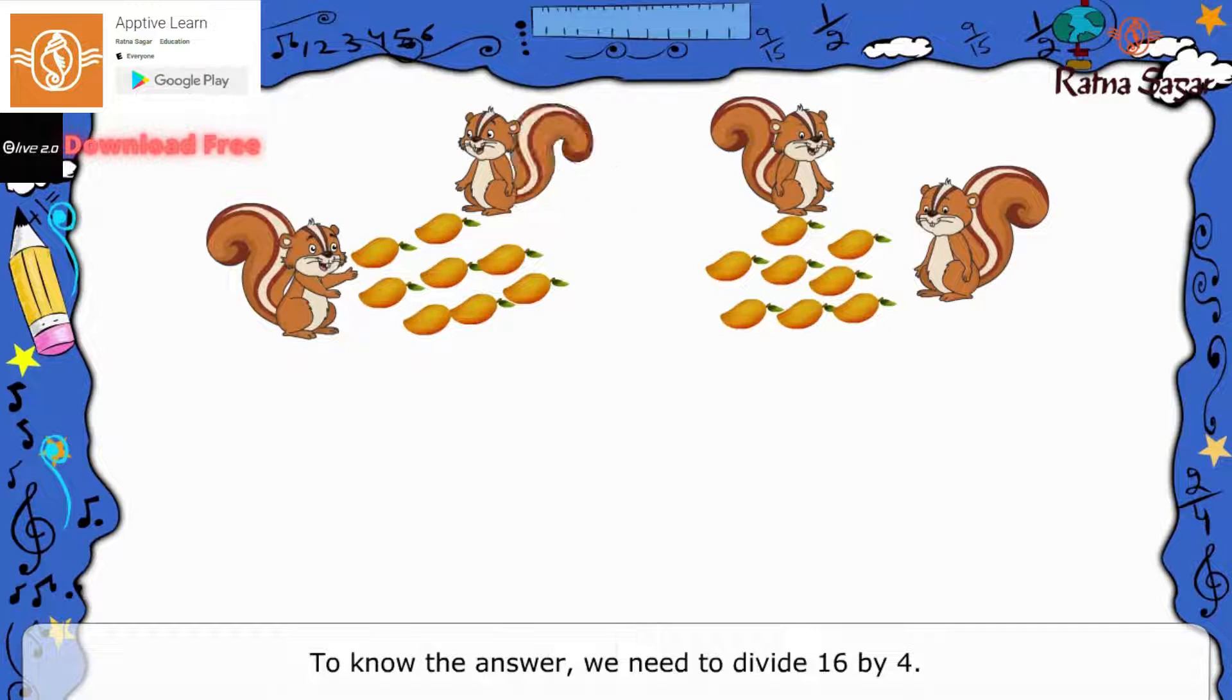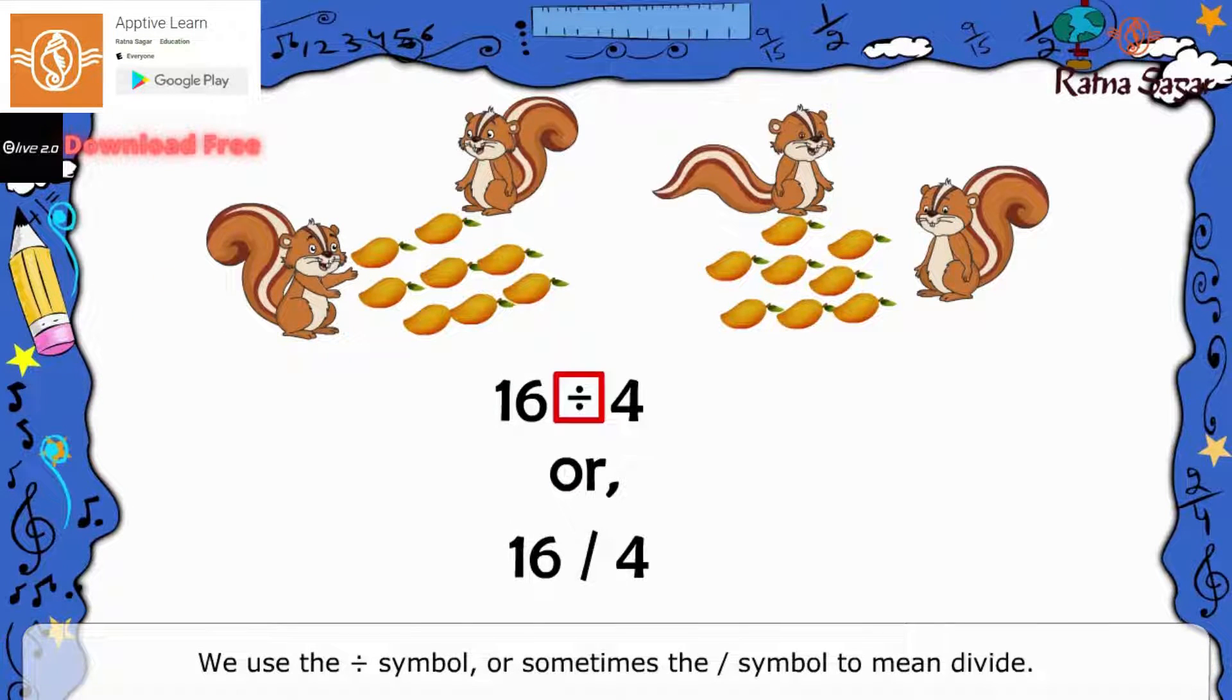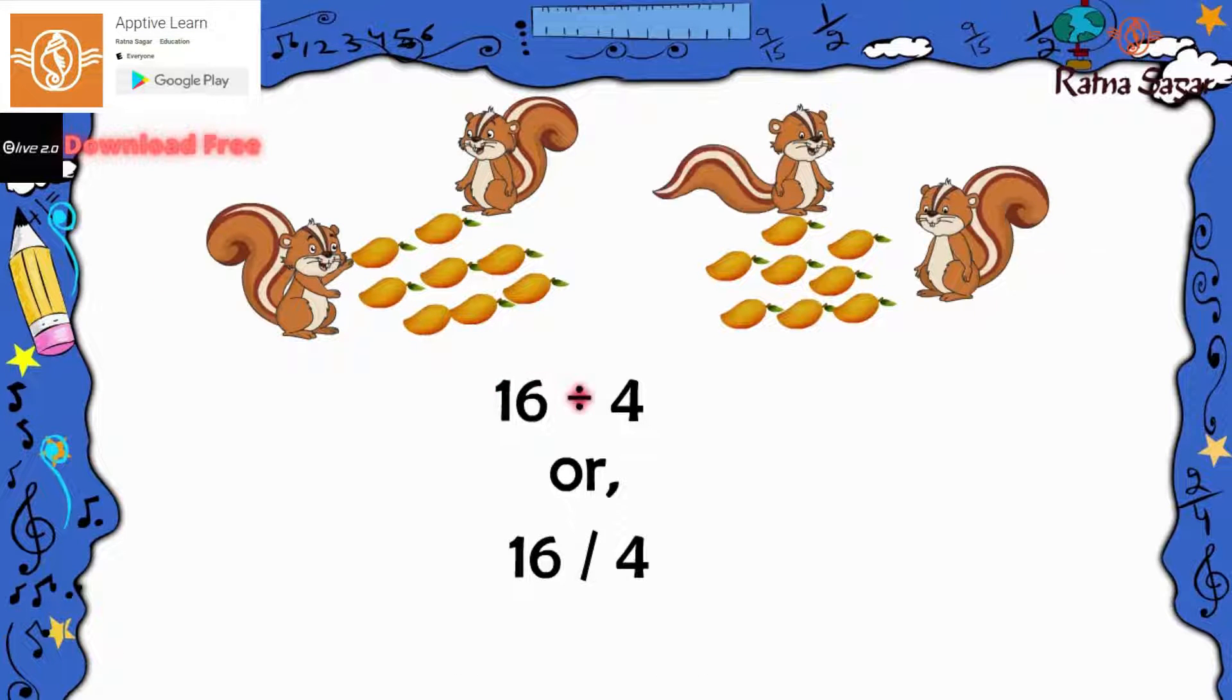To know the answer, we need to divide 16 by 4. We use the division symbol or sometimes the slash symbol to mean divide. Now, let's divide the mangoes among the squirrels. 16 divided by 4 is equal to 4, or 16 slash 4 is equal to 4.